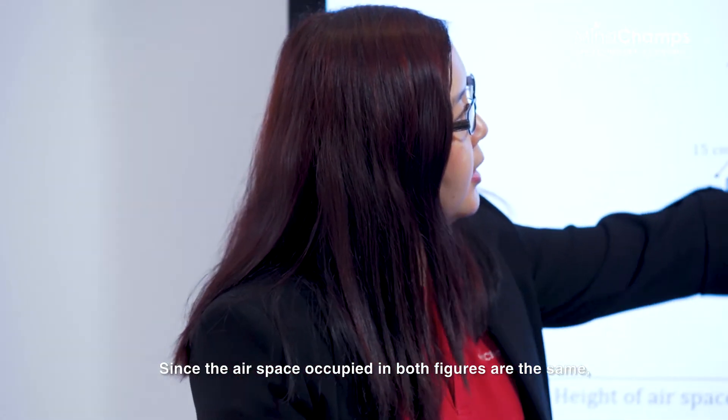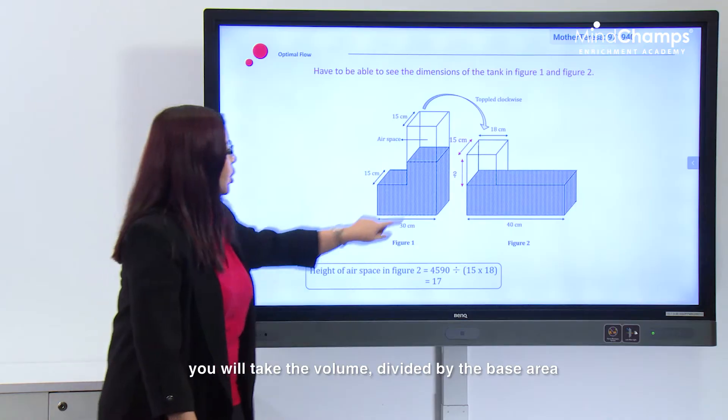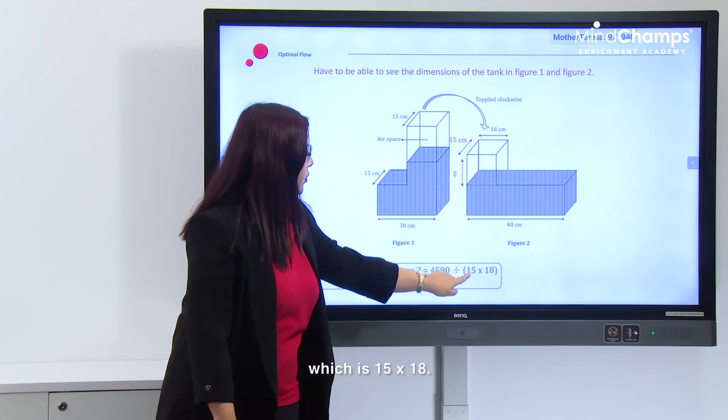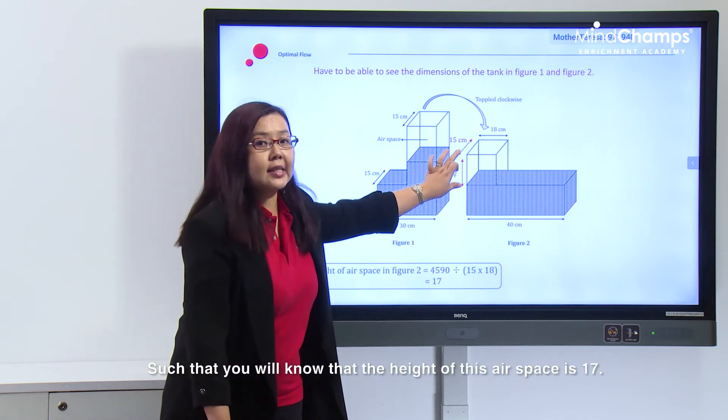Since the airspace occupied in both figures is the same, you take the volume divided by the base area, which is 15 times 18, such that you will know that the height of this airspace is 17 centimeters.